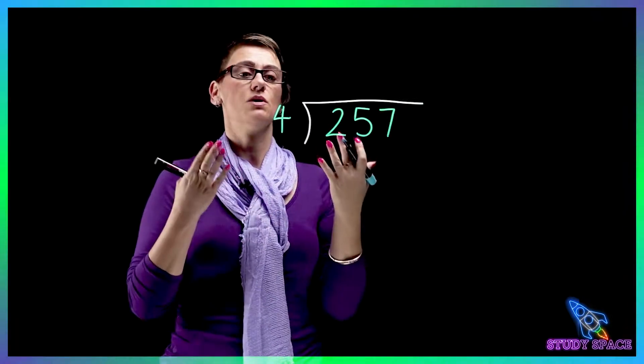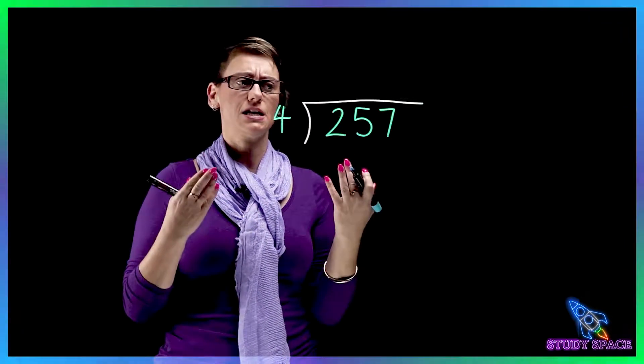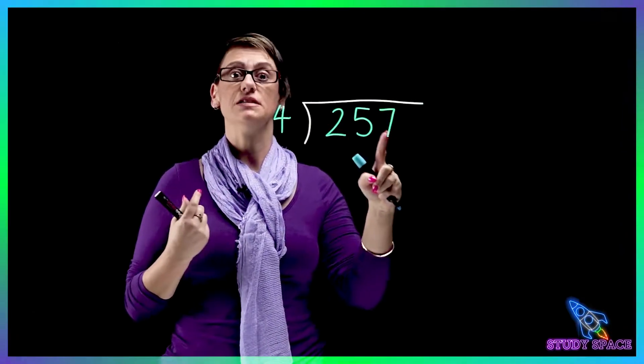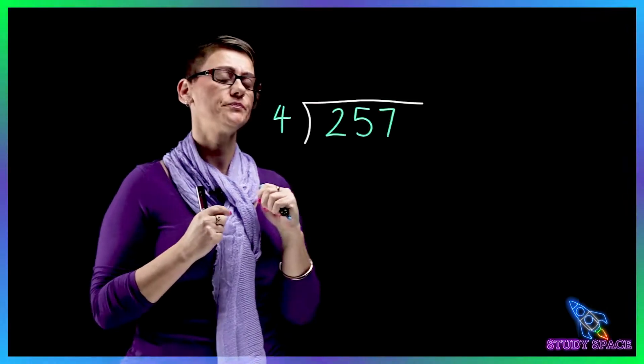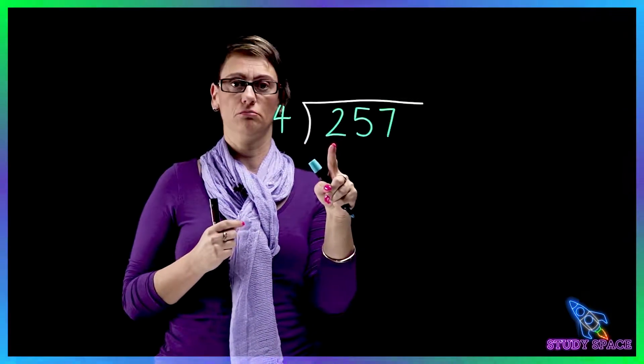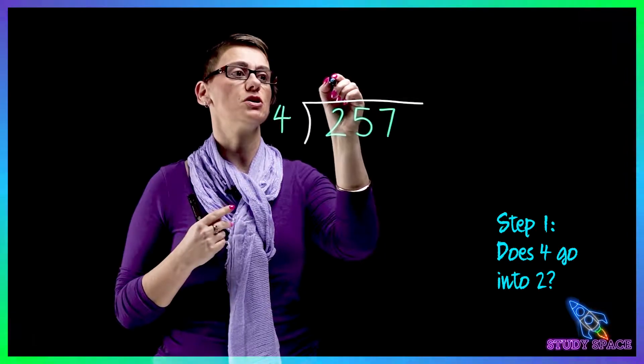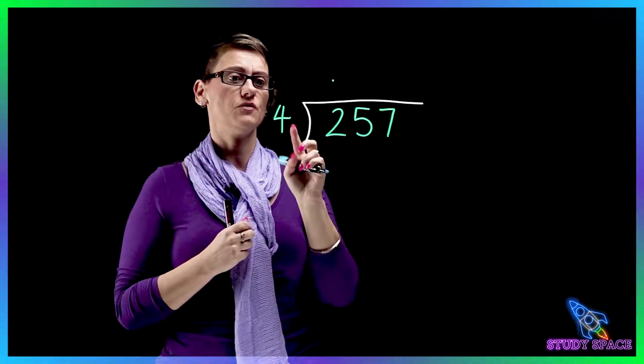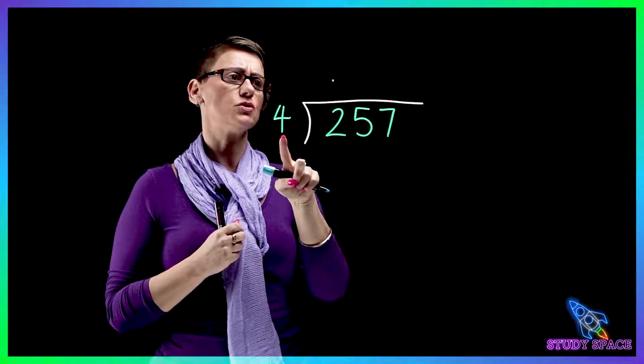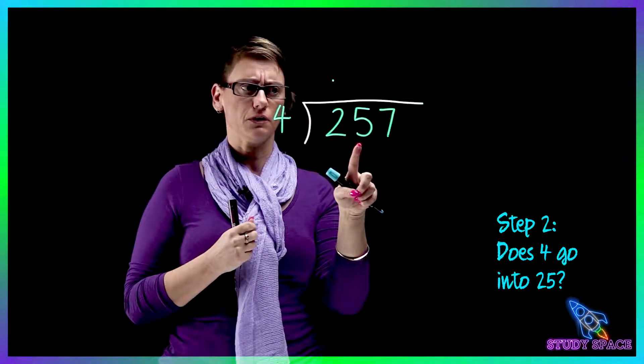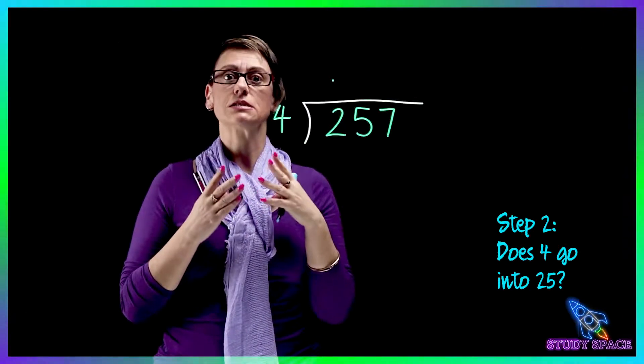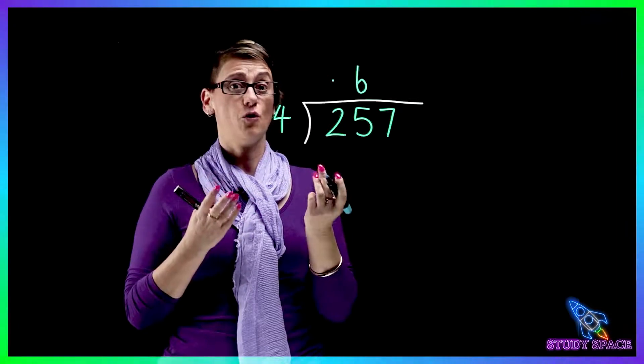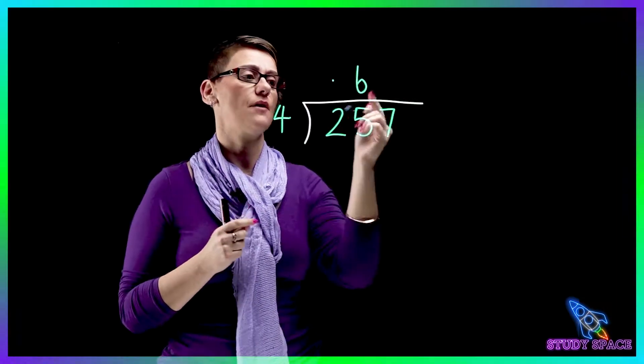Okay, so what's this question asking us? It's asking us how many fours are in 257. So let's solve it. So how many fours are in 2? Can't do. So we'll put a dot there just to show that we've dealt with it. Then we've got 4 into 25. 4 into 25 goes 6 times. So 6 times 4 is 24, which means I've got 1 left over, so I need to carry that over.